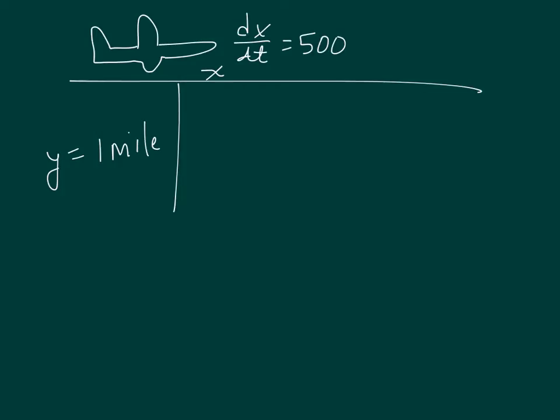The plane passes directly over a radar station. We need to find the rate at which the distance from the plane to the radar is increasing when the plane is two miles away. The plane has already passed over the radar at this point.